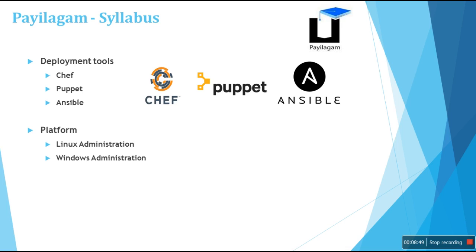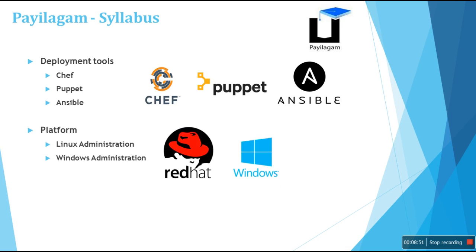For platform and installation, we cover Linux and Windows administration. In Linux we specifically cover Red Hat, and in Windows we cover Windows Server 2012 or 2016 — your preference. For monitoring, we cover Nagios, which is an open source tool that helps you monitor cloud environments or any private systems.